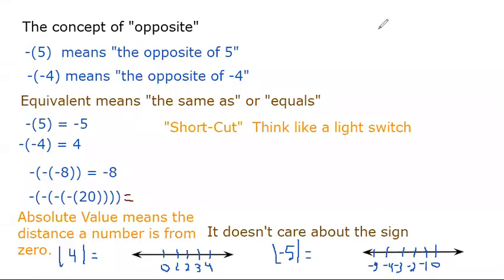The next topic we want to mention is the concept of opposite. Opposite means to take the opposite of — like hot, the opposite of hot would be cold. In math, the dash on the outside of parentheses stands for the words 'the opposite of,' and what's inside the parentheses is what we're taking the opposite of. So the opposite of a positive 5 means to take the opposite of a 5.